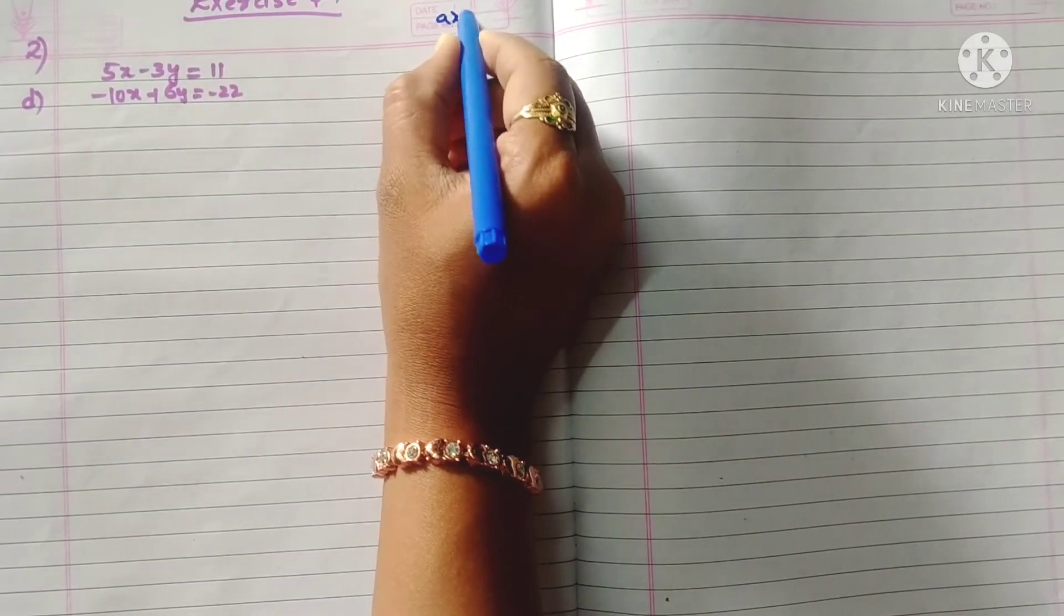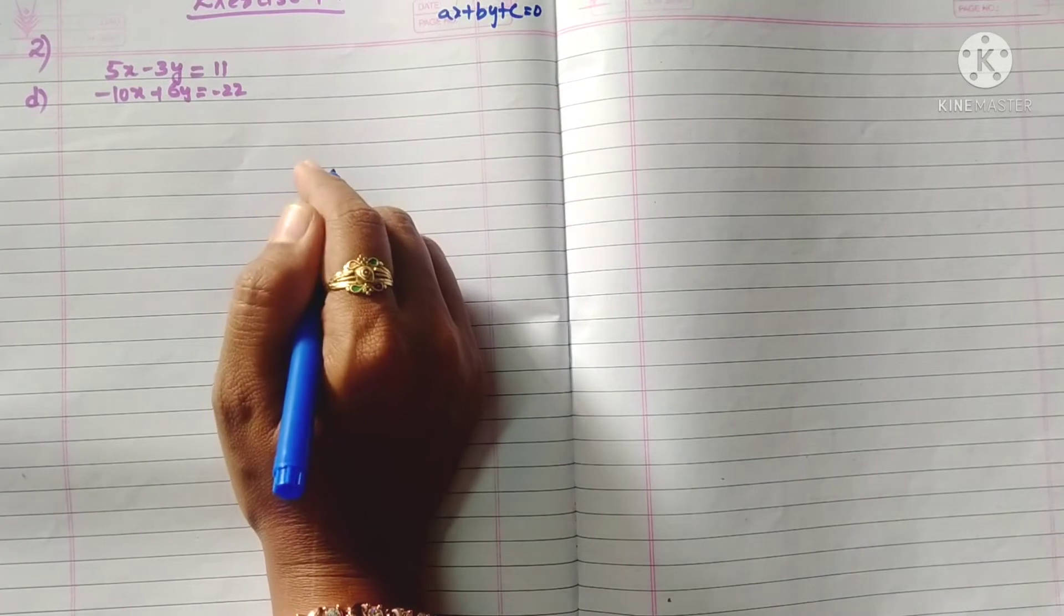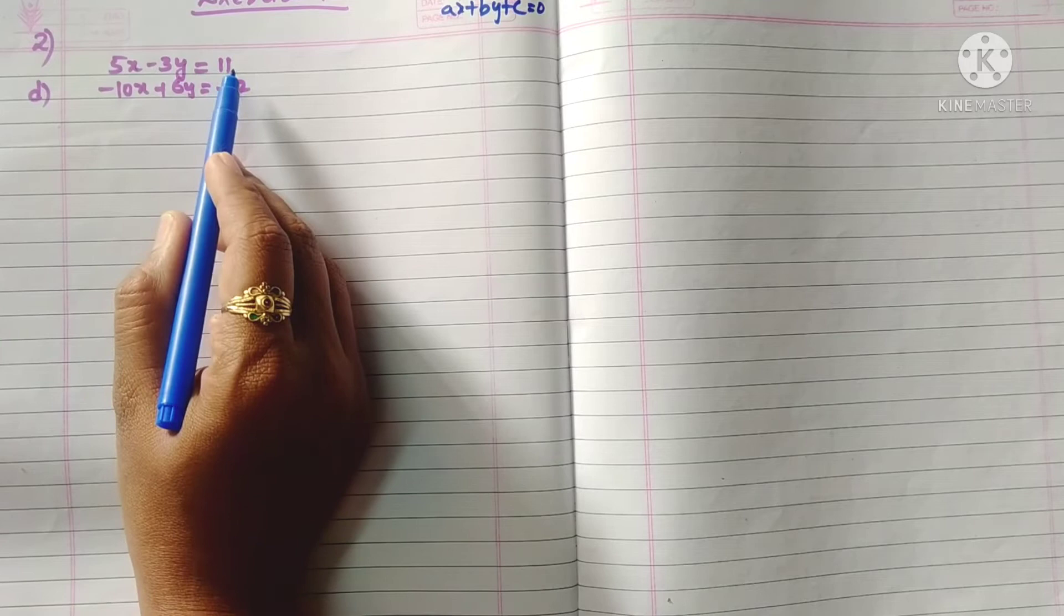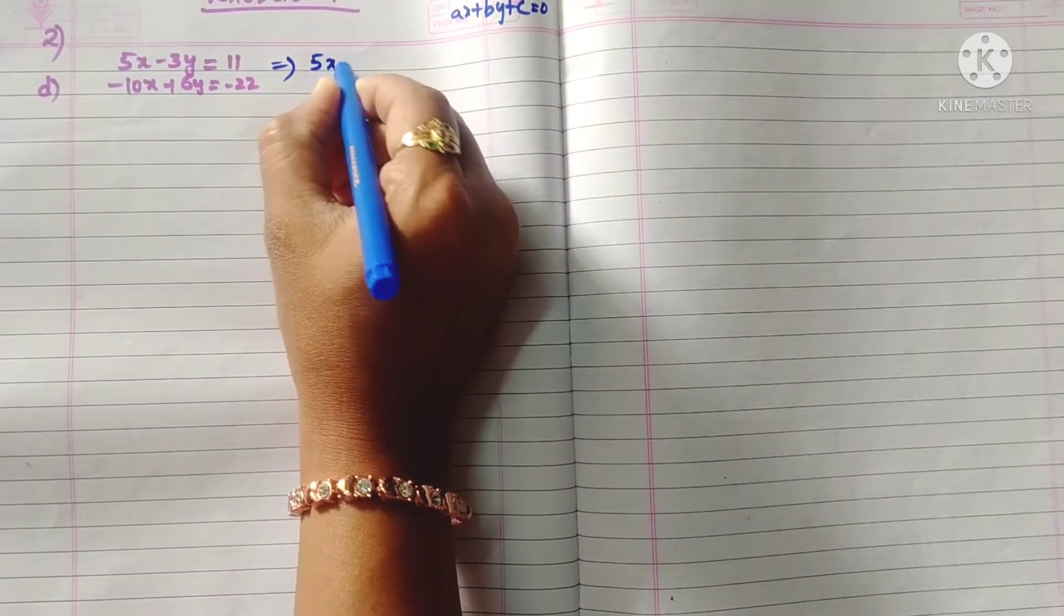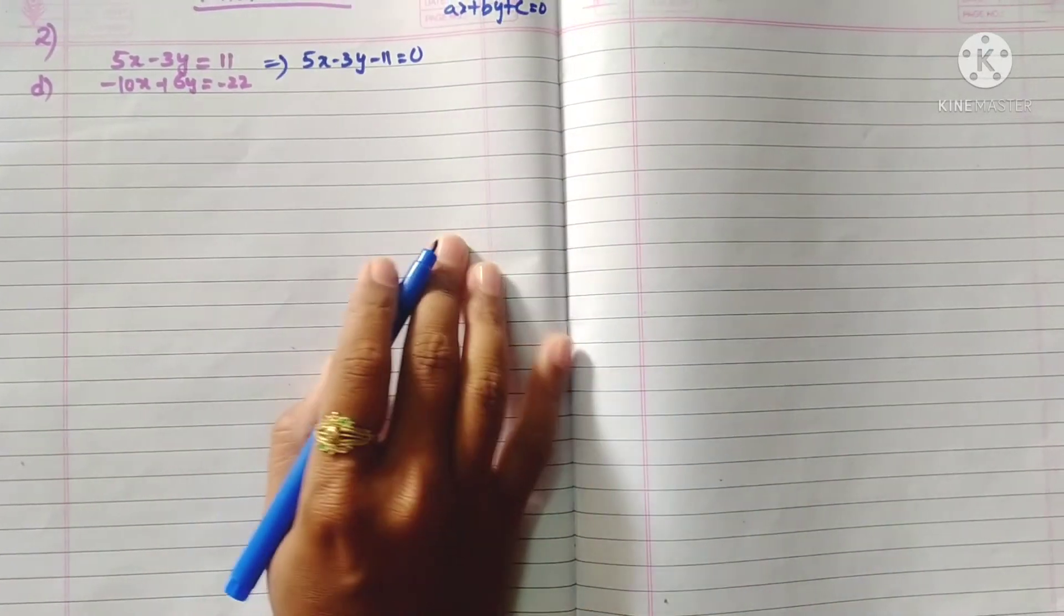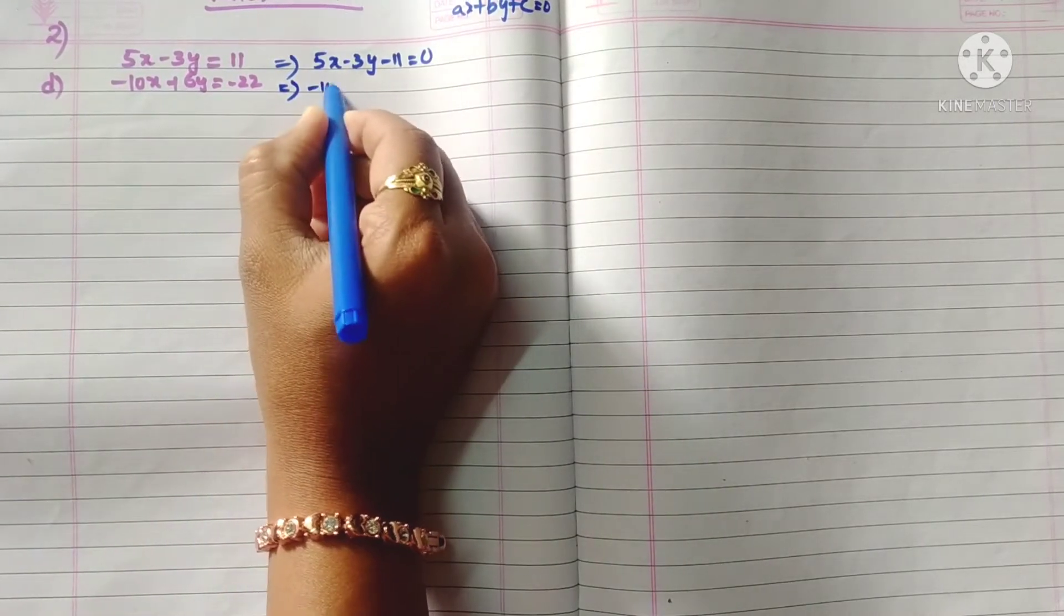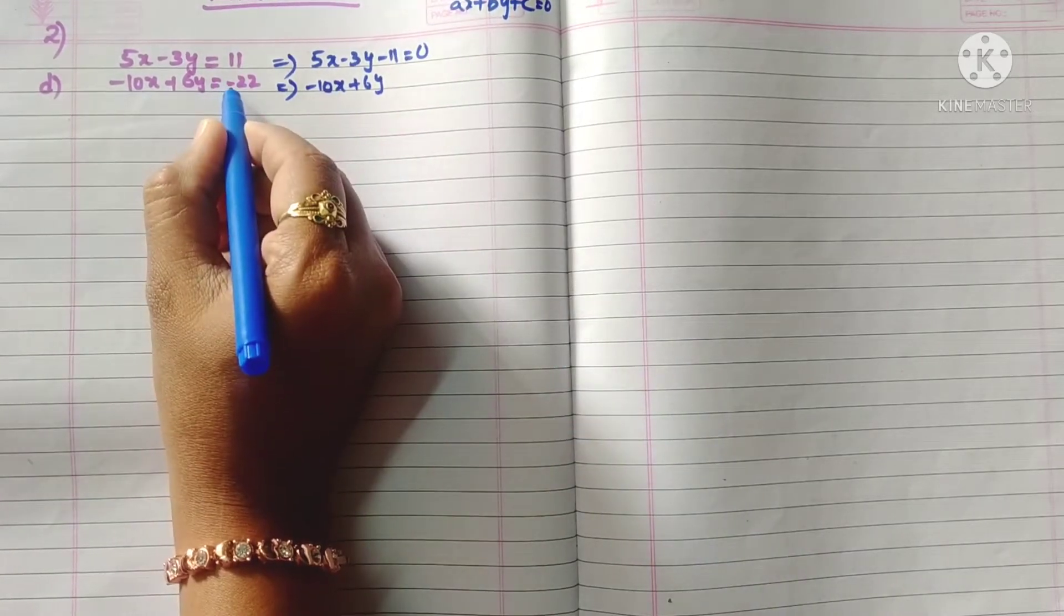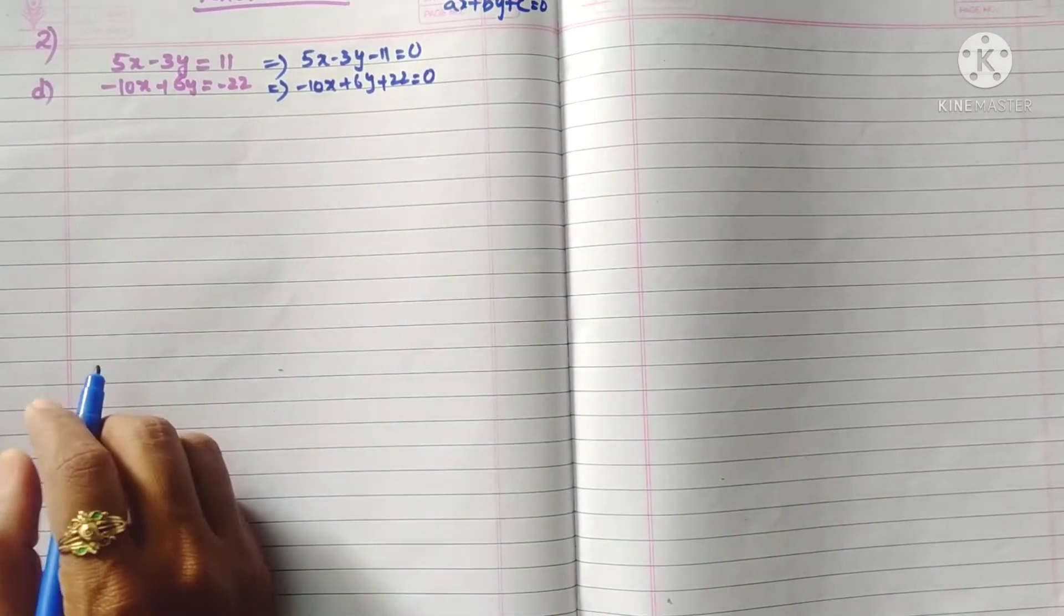First we have to write these equations in the form of ax plus by plus c equals zero. For that we transpose 11 to the left side, then 5x minus 3y minus 11 equals zero. Similarly, minus 10x plus 6y, if we transpose, it is plus 22 equals zero.